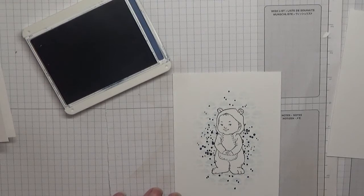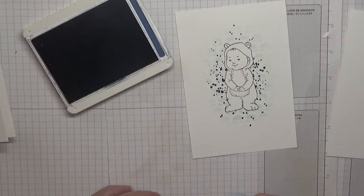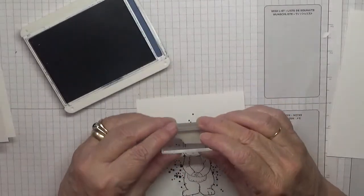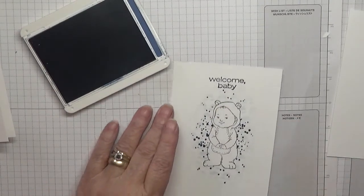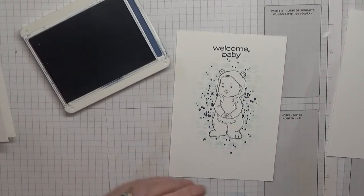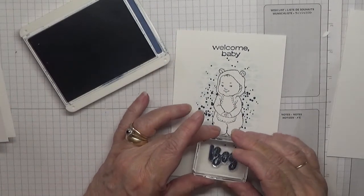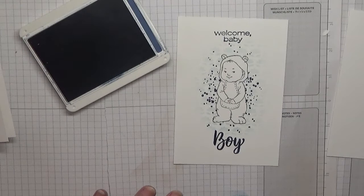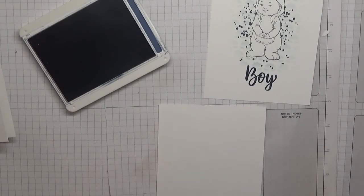I want to do our sentiments, so we've got 'welcome.' Make sure I've got this on straight, right? Yeah, 'welcome baby.' And then what did I do? 'Welcome baby boy,' I want.